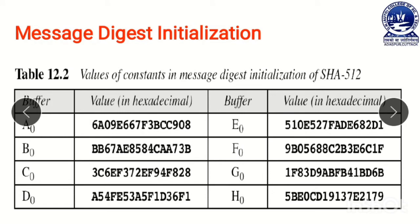Next, message digest initialization. In the first iteration's compression function, we use an initial message digest, and this initial message digest is initialized by some initial value or initial vector. Our message digest size is 512 bits and it is divided into 8 number of words, assigned to 8 registers — a to h. The first register value, second register value, third, fourth, and so on — these values are the constant initialization values of our initial message digest in SHA-512.